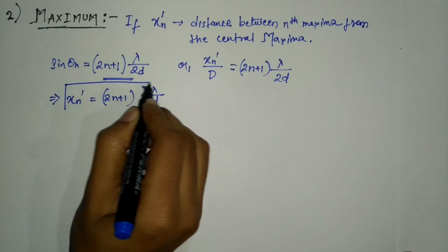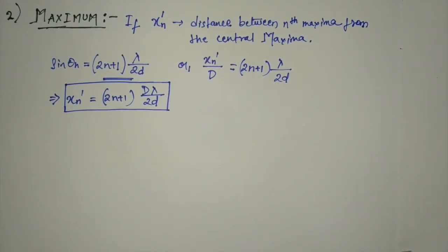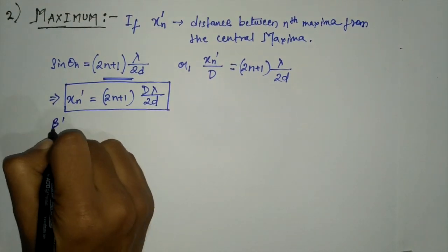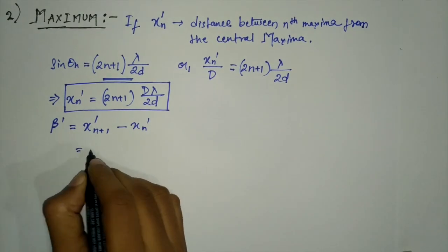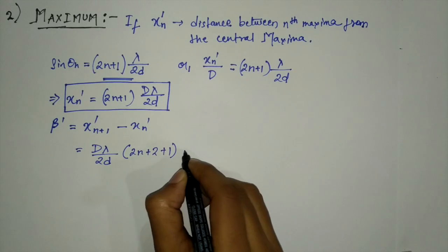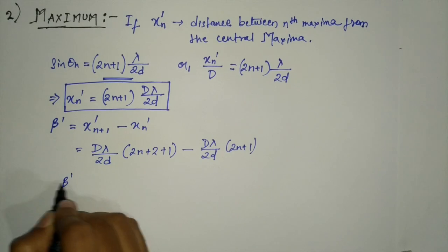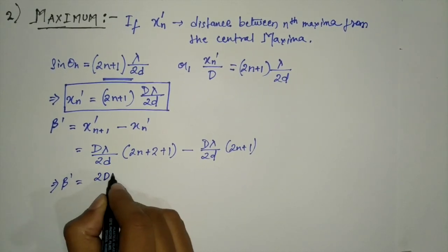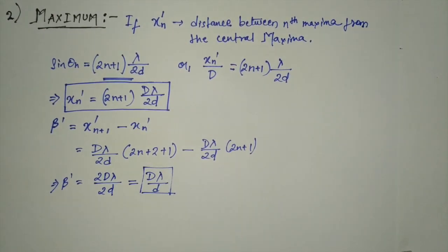Similarly, if xn' and x(n+1)' are the positions of nth and (n+1)th order maxima from the central fringe, then the width of the secondary maximum, let it be β', will be equal to x(n+1)' − xn'. That equals D·λ/2d · (2n+3) − D·λ/2d · (2n+1), therefore β' equals D·λ / d.